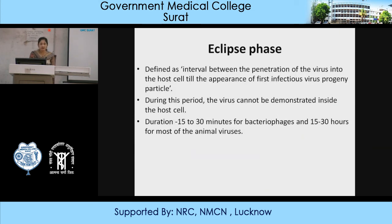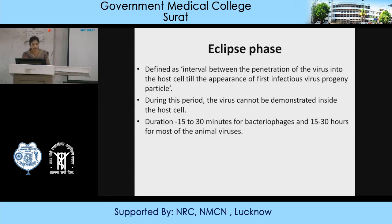The eclipse phase is defined as the interval between the penetration of the virus into the host cells and the appearance of the first infectious progeny virus particle. During this period, the virus cannot be demonstrated in the patient's serum. Duration is 15–30 minutes for bacteriophage and 15–30 hours for most animal viruses.